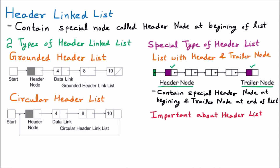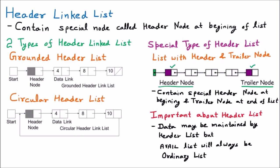One important thing about the header link list: we have modified the ordinary list with a header. But remember, there is one more list called the avail list, which contains the free nodes — meaning the free memory spaces available in memory. The avail list can never have a header. So data may be maintained by a header list in memory, but the avail list will always be an ordinary list and cannot be converted to a header link list.